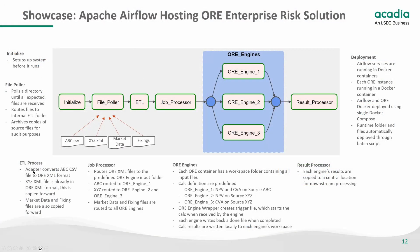What we saw during the demo was the following: an initialization step that prepares the system for the run; a file puller that pulls all the input files and routes them to internal ETL folders, also archiving the input files for audit purposes. Next, the ETL process converts the ABC CSV file into the ORE XML format. The XYZ file was already in the ORE XML format so it was just copied forward. The market data and fixing files were also in the native format so they were copied forward as well.